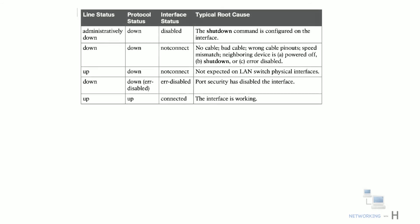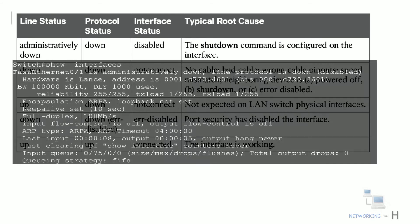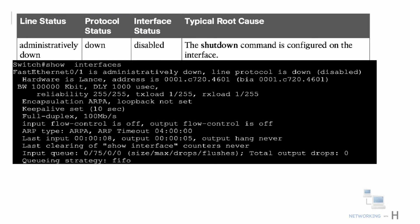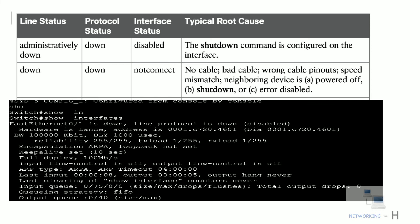Let's look at the code combinations and some root causes. If you see the line status as 'admin down' or protocol status as 'down', or if the interface status is 'disabled', then the likely cause is that the shutdown command is configured under the interface. If the line status is 'down' and protocol status is 'down', or the interface status is 'not connect', the likely causes are: no cable, bad cable, wrong cable pinouts, or speed mismatch.